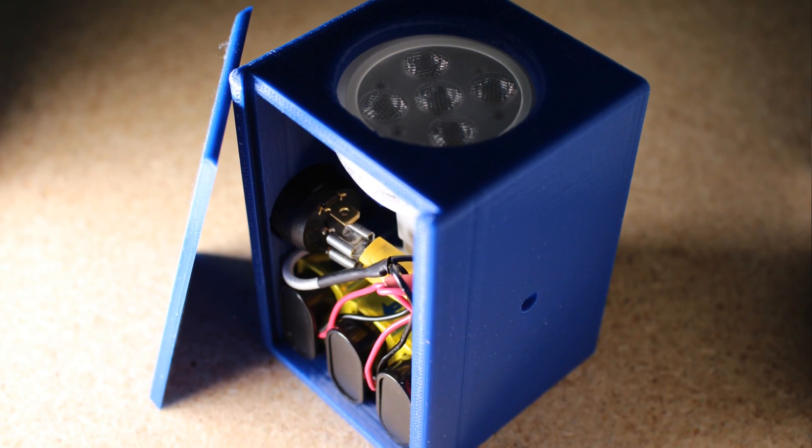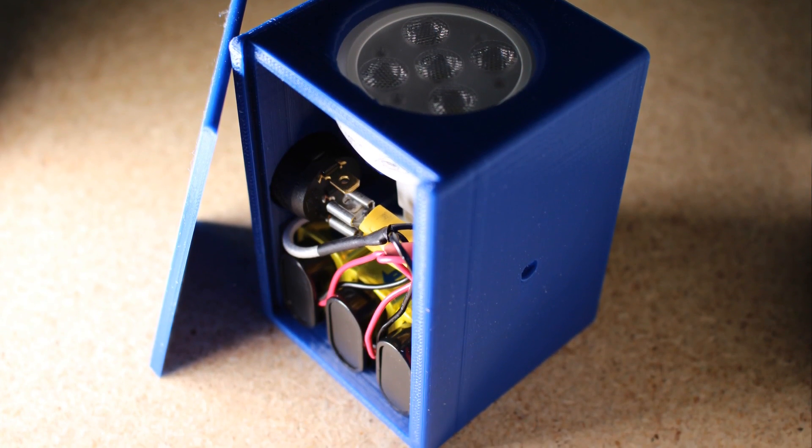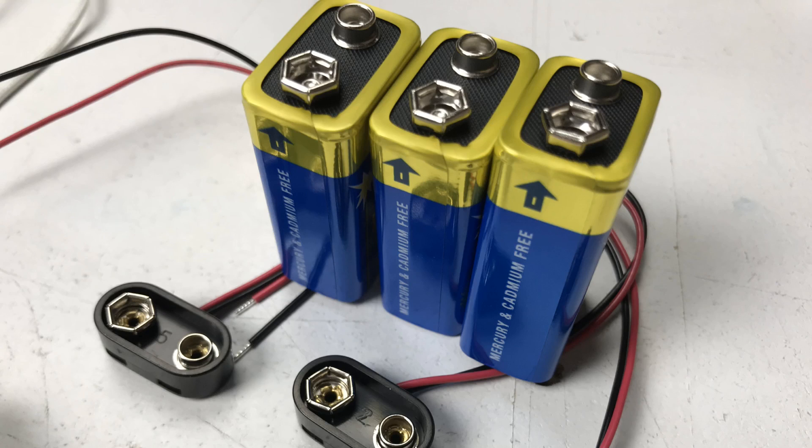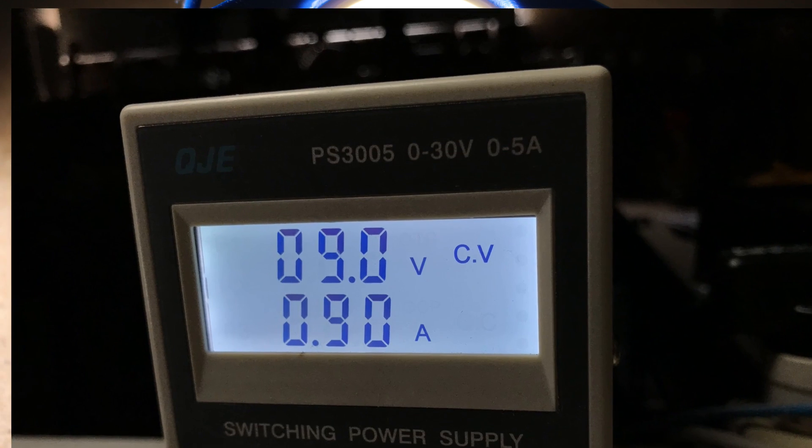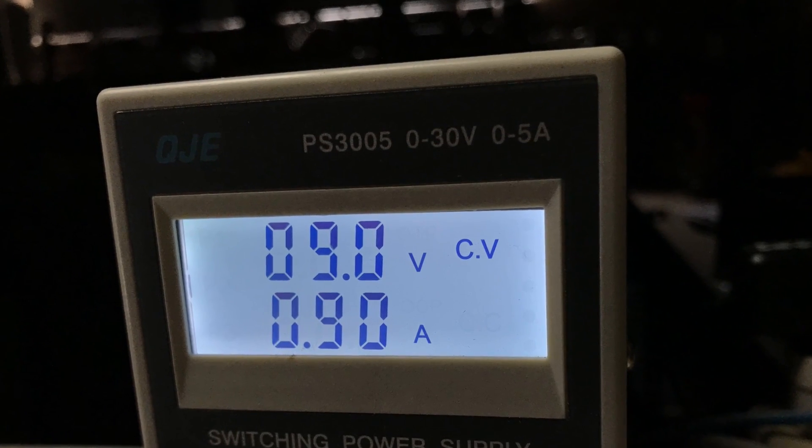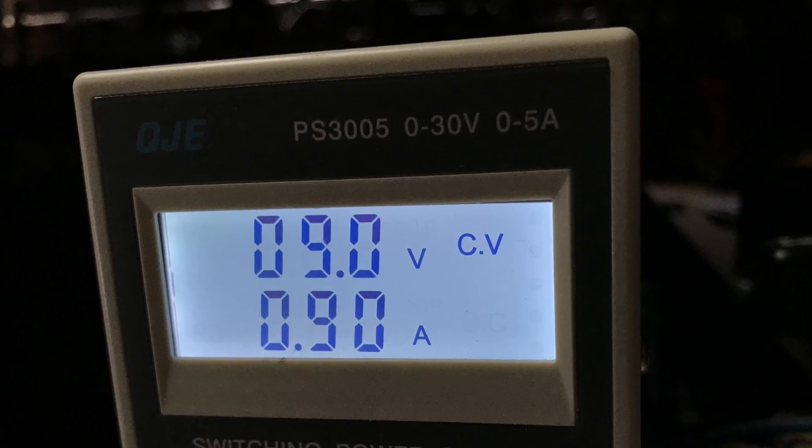In this case we're using three 9 volts in parallel giving us a 9 volt supply. The reason we're using three 9 volts is because one 9 volt peaks out at around about 500 milliamps. Most of them somewhere around 350. At 9 volts this one MR16 globe draws 900 milliamps. So three of them tied together in parallel gives us our 9 volt supply at about 900 milliamps, probably around about an amp.